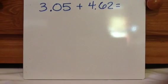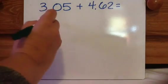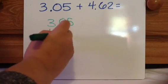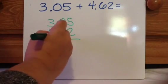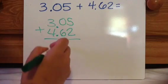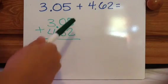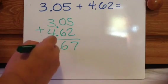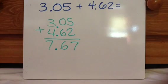Okay, let's look at this. 3.05 plus 4.62. So again, line up those decimals. And then add up. 5 plus 2 is 7. 0 plus 6 is 6. 3 plus 4 is 7. 7.67.